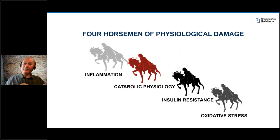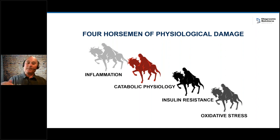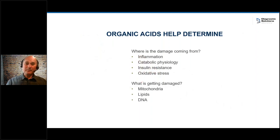At the big picture level, from a biochemical physiology standpoint, we're looking at inflammation, catabolic physiology — meaning a breakdown state where you can look at insulin resistance markers — and oxidative stress, which is sort of the generator of all bad things in the human body. There are markers on this test that cover each one of these areas. These are the four main areas I try to educate my patients about: what we want to look at, turn around, and correct. And you can often find out where the damage is coming from.